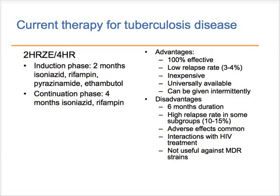On the other hand, the regimen does have several disadvantages. It's still six months long, which is a long duration for many patients. In some subgroups — patients with very extensive burden of tuberculosis who are slow to respond during the induction phase — the relapse rate may be considerably higher, in the neighborhood of 10 to 15 percent if treatment is stopped after six months. Side effects are common. This regimen also includes medicines that can have significant drug-drug interactions with some medicines used to treat HIV infection. And by definition, this regimen is not useful against multi-drug resistant strains of tuberculosis, which are by definition resistant to isoniazid and rifampin.